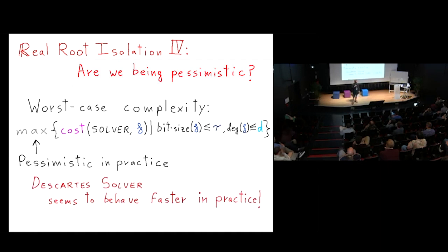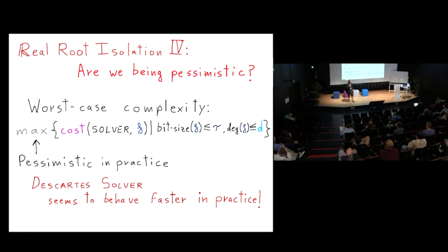When we observe the Descartes solver without modifications — without adding Newton's method as in Melhor and Sagralov — we observe that it tends to work well in practice. So the question is: can we explain this empirical behavior of the algorithm?